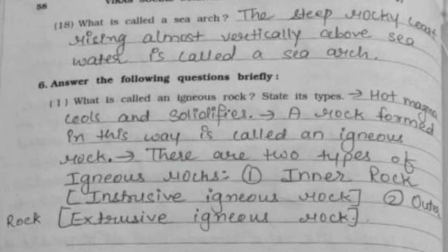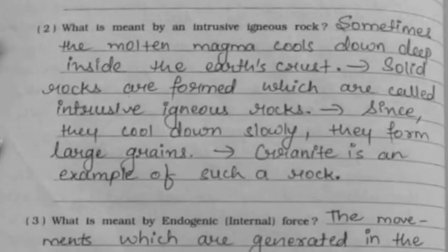Now Question 6 — Answer the following questions briefly. First: What is called an igneous rock, and what are its types? Hot magma cools and solidifies; a rock formed in this way is called an igneous rock. There are two types: inner rock, that is intrusive igneous rock, and outer rock, that is extrusive igneous rock. Second: What is meant by an intrusive igneous rock? Sometimes molten magma cools down deep inside the earth's crust; solid rocks formed this way are called intrusive igneous rocks.